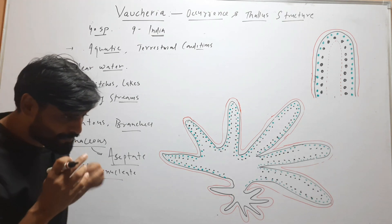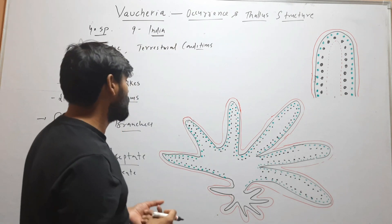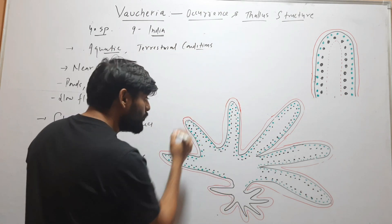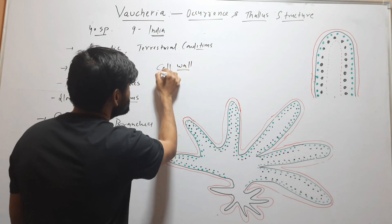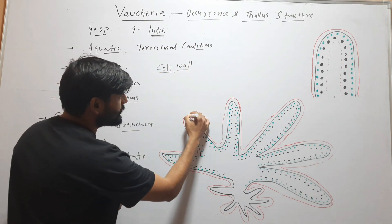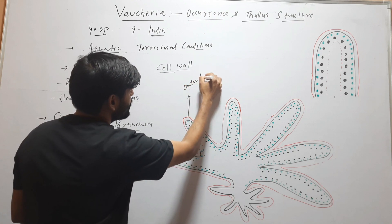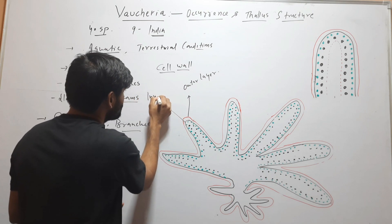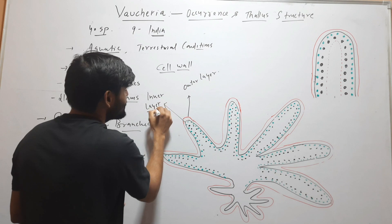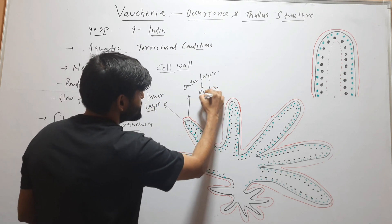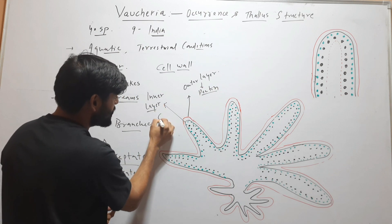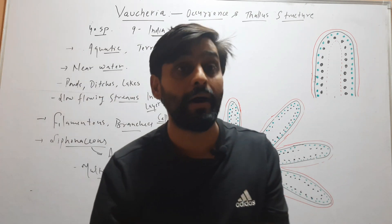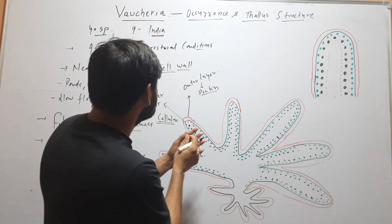When we look at the internal structure of the thallus, the outer covering of the filament is the cell wall. This cell wall is differentiated into two layers — the outer layer is made up of pectin substances, and the inner layer is made up of cellulose.